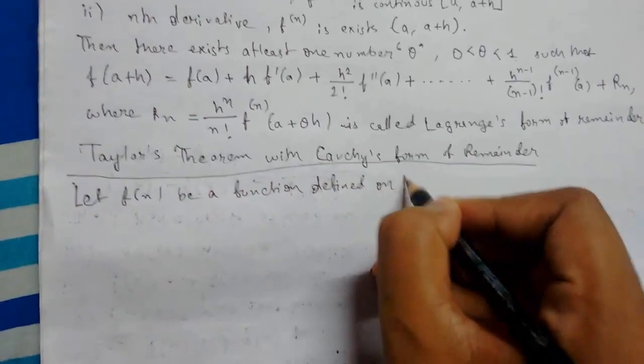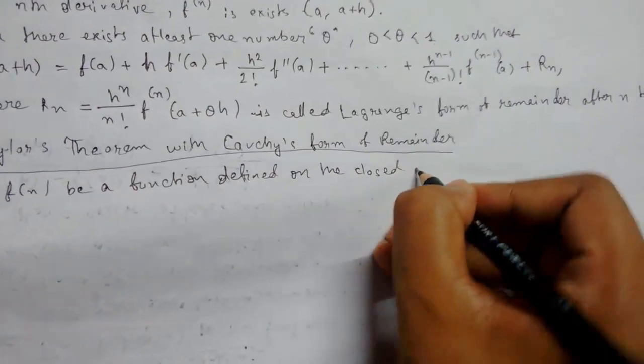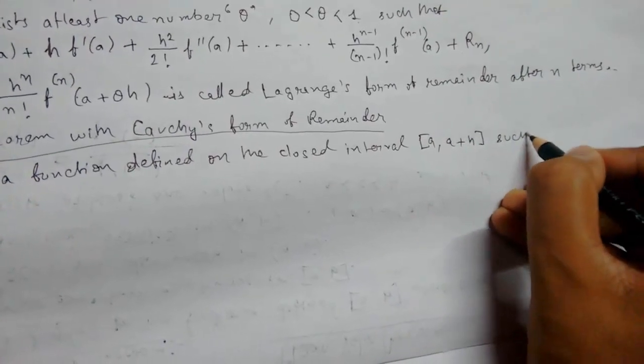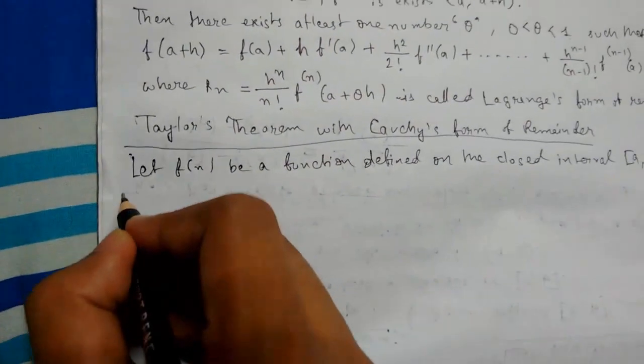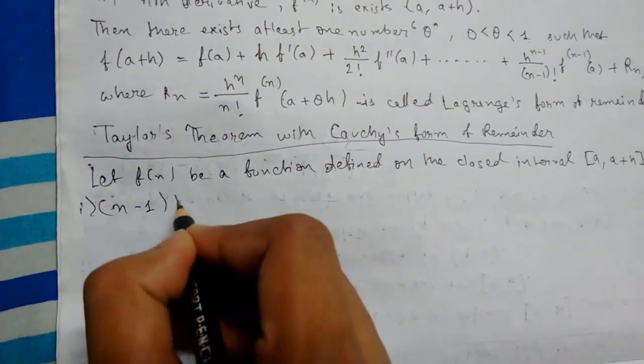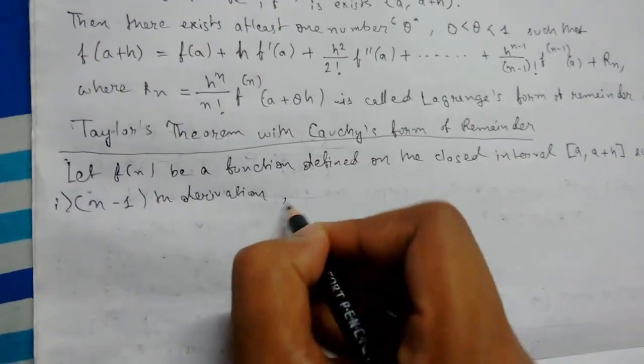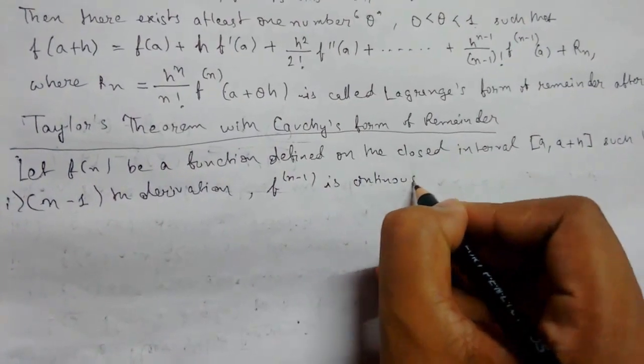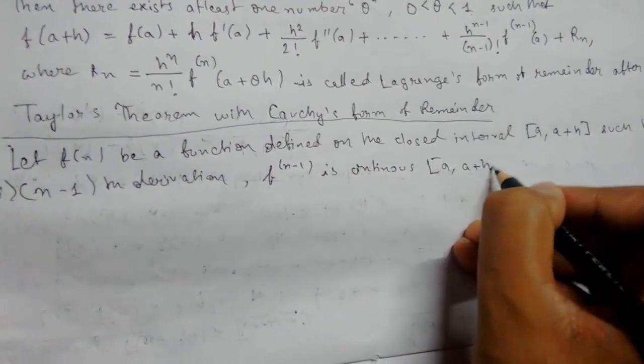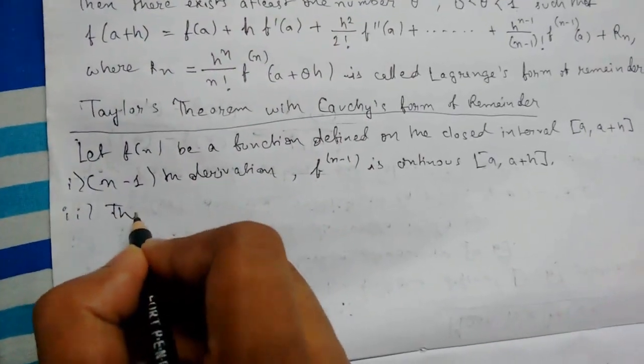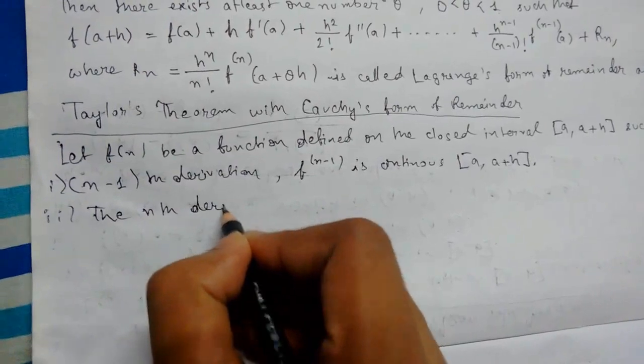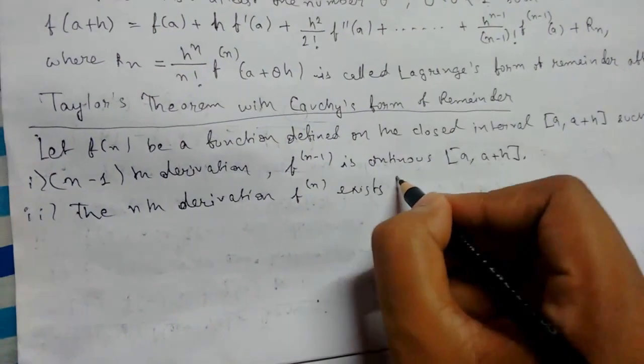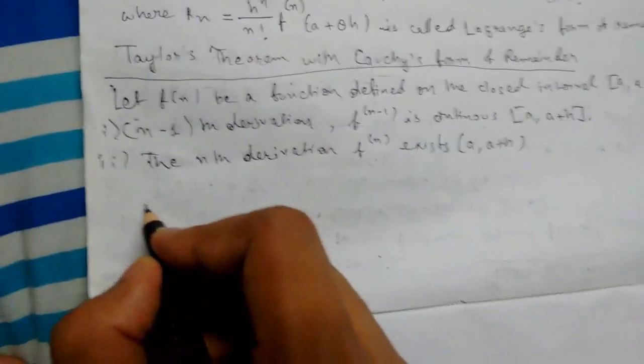...defined on the closed interval [a, a+h] such that the (n-1)th derivative, that is f^(n-1), is continuous in the closed interval [a, a+h]. Number two: the nth derivative, that is f^(n), exists in the open interval (a, a+h).